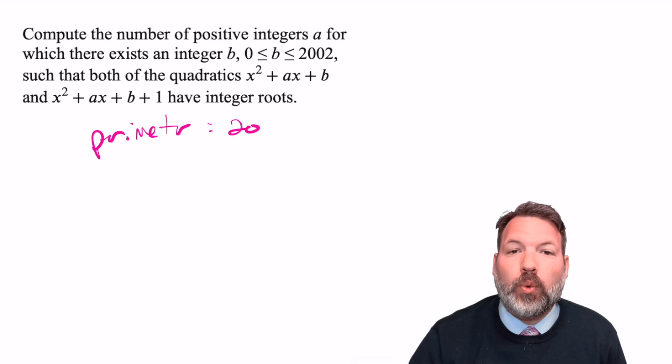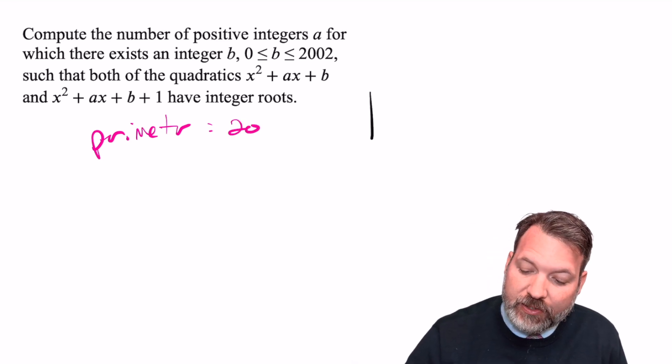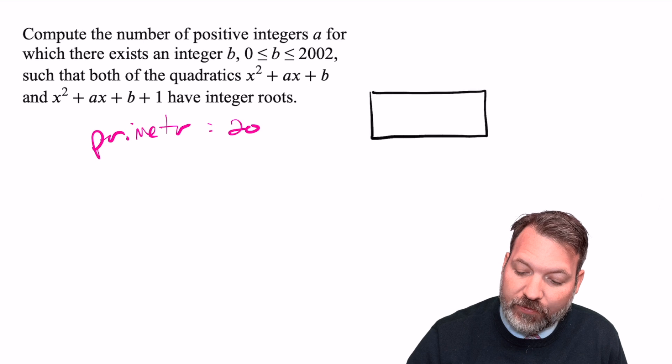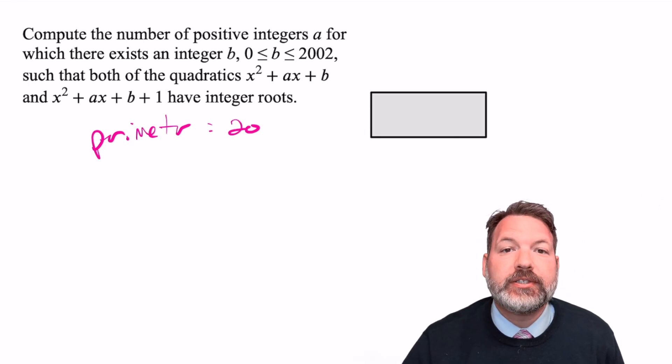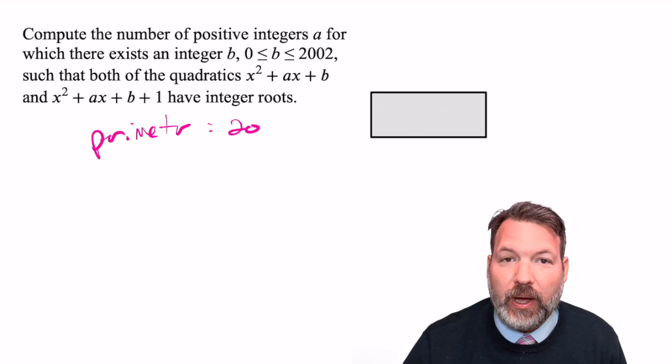Take for example, a perimeter of 20. So that means that two of our side lengths are going to add up to 10, because of course the perimeter is going to be the sum of all four sides. So two sides at a time will be half as much.